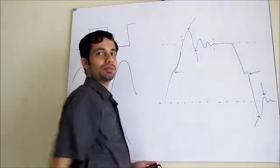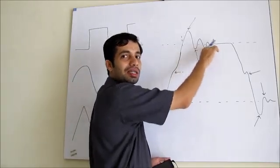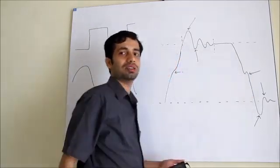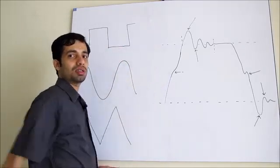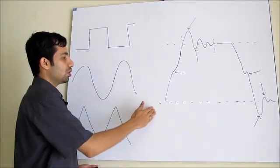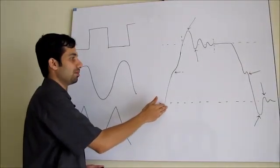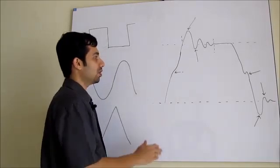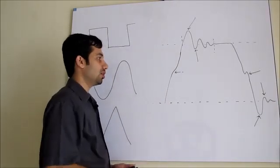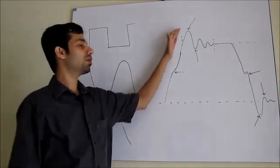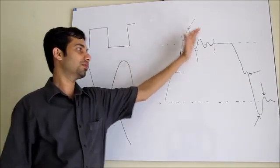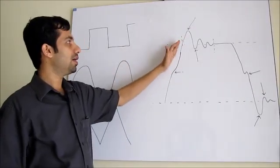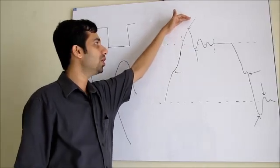There is an overshoot, also some ringing and distortions on the falling edge. Let us examine one by one what they are. Due to the capacitance of the medium, or the properties of the medium through which the signal propagates, the signal gets delayed. That is how we see a slope on the rising and falling edges. Instead of becoming flat, it actually overshoots the amplitude limit.